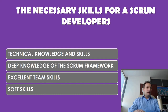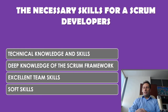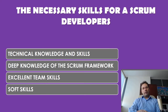Now let's look at the necessary skills for a Scrum developer. A Scrum developer should have technical knowledge and skills — for example, software analysis, coding, software programming, or testing. They should have deep knowledge of the Scrum framework and an understanding of how to implement it effectively for any type of project. Excellent team skills are necessary for collaboration with other team members. Other important soft skills include being highly motivated, proactive, self-organized, independent, reasonable, intuitive, and goal-oriented.